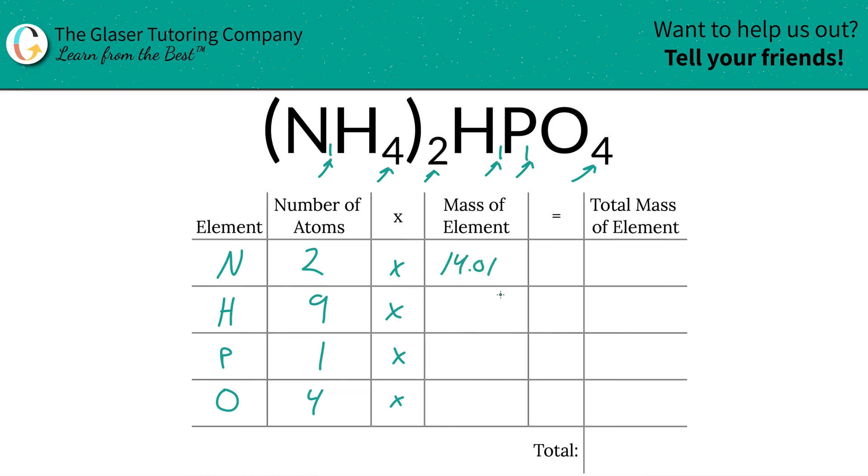So that's what we're going to write down. So nitrogen is 14.01, hydrogen is 1.01, phosphorus is 30.97, and oxygen was 16. And then to find the total mass of the element in the compound, we're simply going to multiply this row on across. So that works out to be 28.02 units of mass for nitrogen. Hydrogen is going to be 9.09, phosphorus is 30.97, and oxygen, therefore, will be 64.